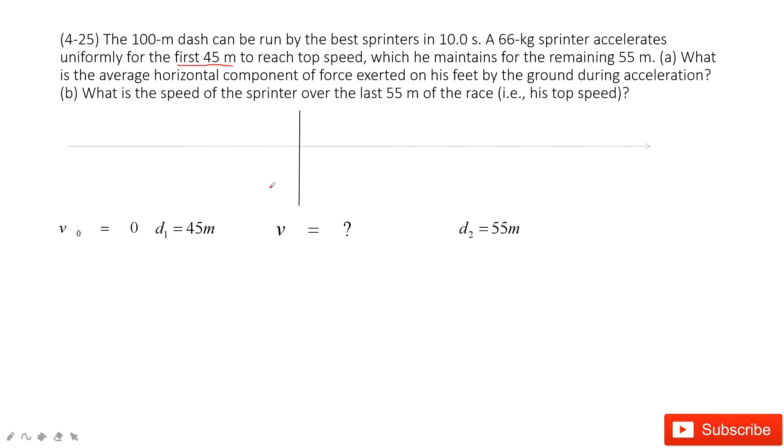So in this one, we can see, do we have any other given quantities? Yes. Because we know this is T_1, this is T_2, and the total time taken is 10 seconds. So this is all the given quantities.